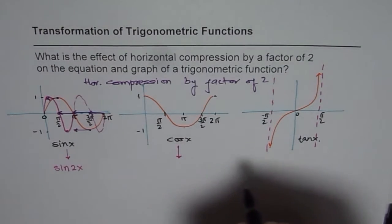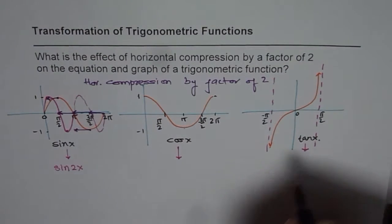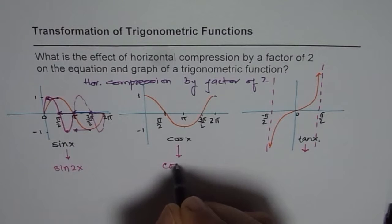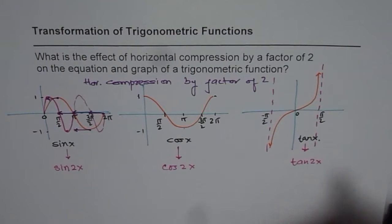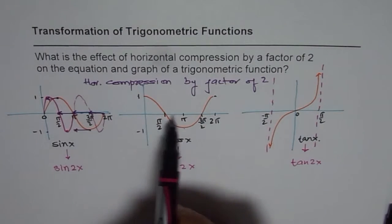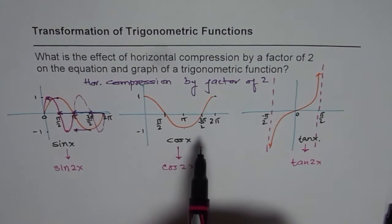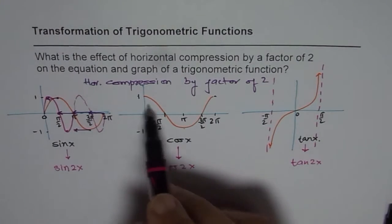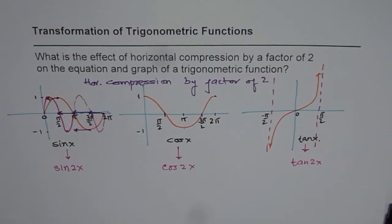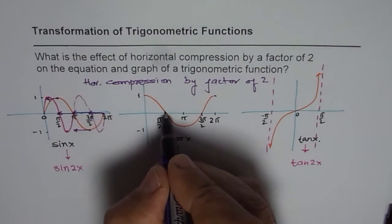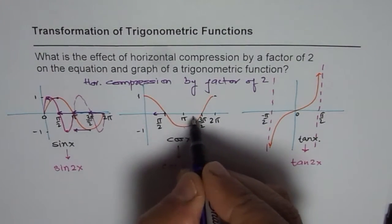Same is going to be the case for the other two functions also. So as far as the equation goes, instead of cos x, we will have cos of 2x, tan x will become tan of 2x. It really means that within this interval of 2 pi for cos, we will have not one full wave, but we will have two waves since each point will be half way.